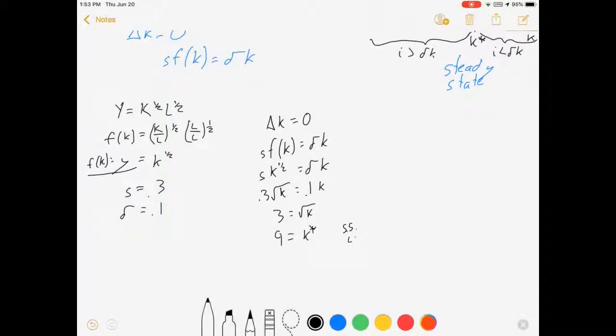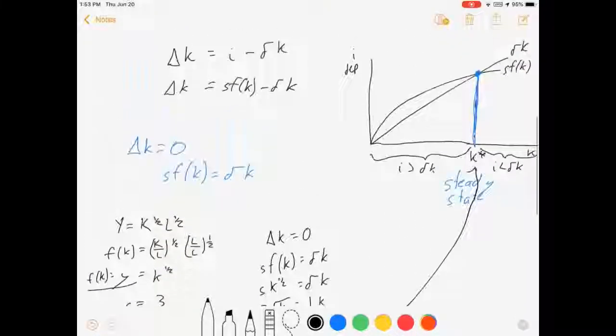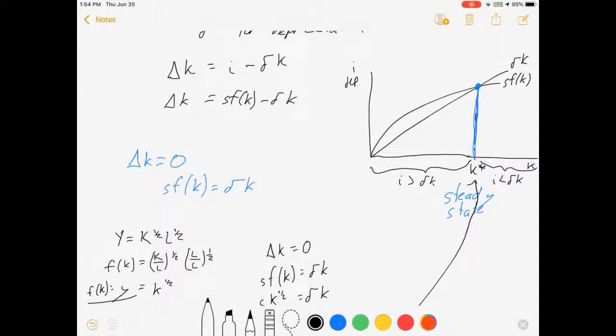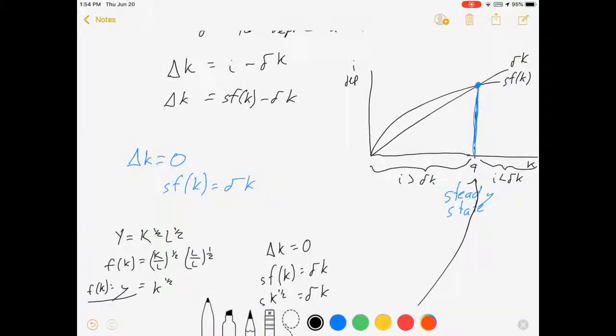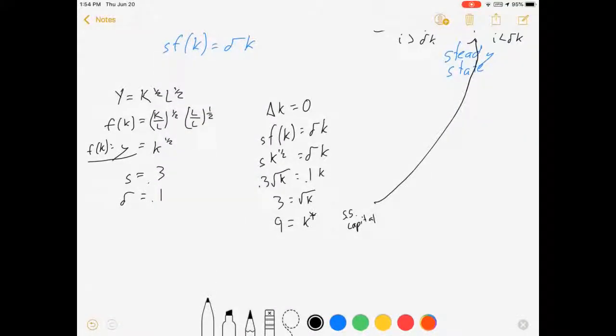That's the steady state capital level, that's the one that goes up here, k star, where anything less than nine units of capital, so I'm going to put a nine in here real quick just for good measure. Anything less than nine units of capital will have greater investment than depreciation and so our capital will increase towards nine. Anything greater than nine units of capital will have less investment than depreciation which will cause our capital stock to fall towards nine. And that's pretty much how that works in a nutshell.